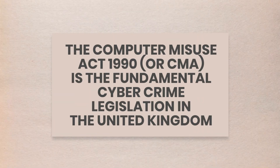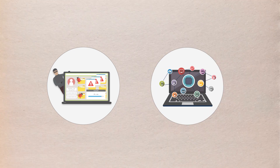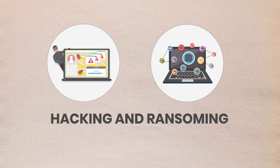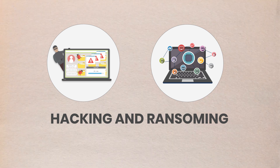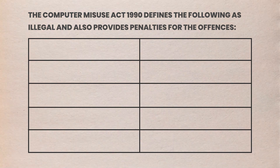Cybercrime is common on the internet nowadays. As time passes, cyber risks are becoming more and more difficult to identify, as cybercrime becomes more sophisticated. But there are lots of cybercrime legislation in the UK that exists to deter and protect people from such crime. The Computer Misuse Act 1990 (CMA) is the fundamental cybercrime legislation in the United Kingdom. It addresses many malicious attacks or offences against computer systems, such as hacking and ransoming. This is the act under which all cybercriminals are brought to trial. The Computer Misuse Act 1990 defines the following as illegal and provides penalties for the offences.